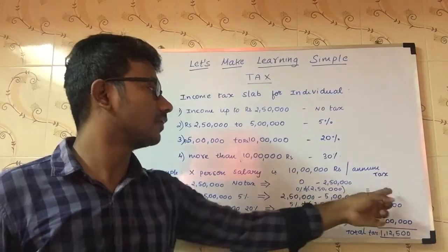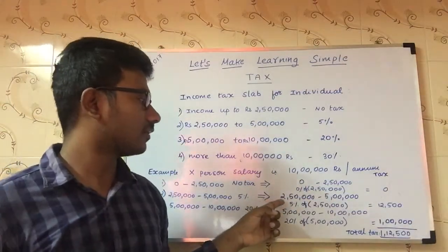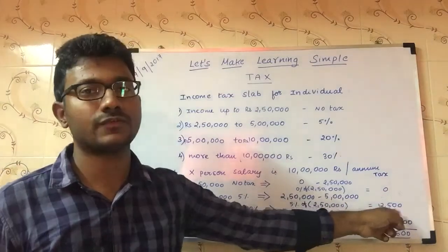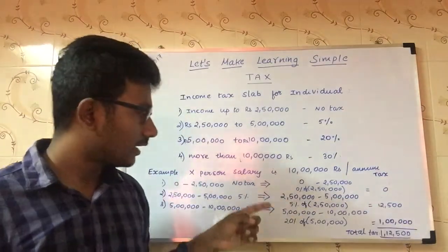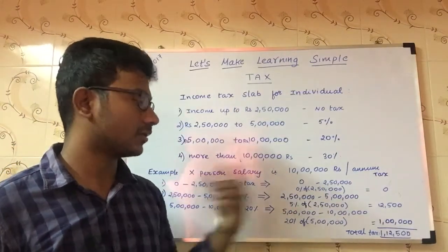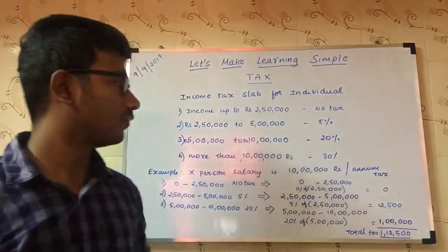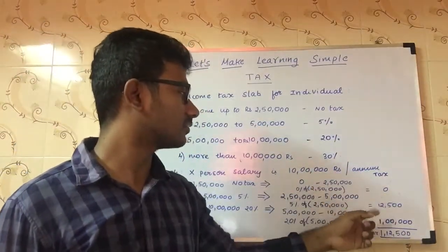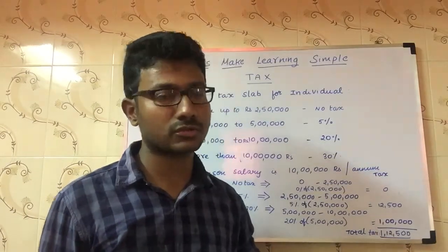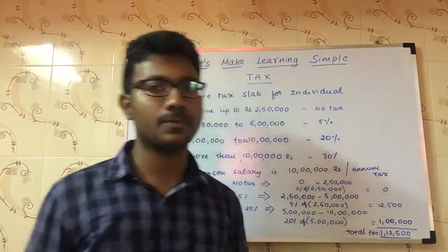For the first slab, the tax rate is 0%, so the tax is zero. For the second slab, the tax rate is 5%, so 5% of 2,50,000 is 12,500 rupees. For the third slab, the tax rate is 20%, so 20% of 5 lakh is 1 lakh. Adding these together, the total tax is 1,12,500 rupees. This is the actual tax you need to pay to the government.